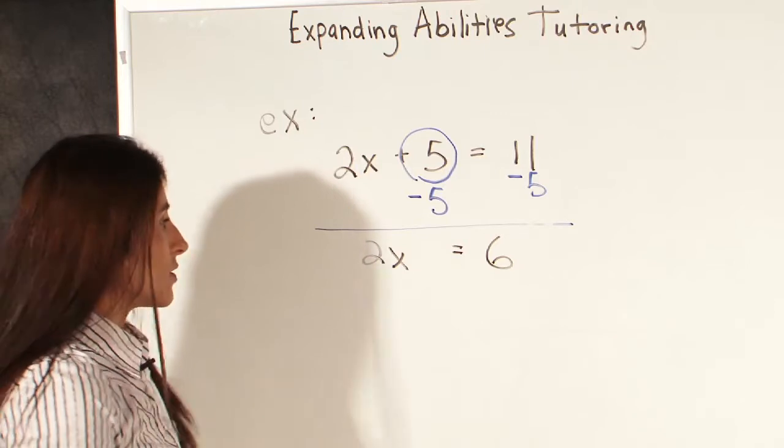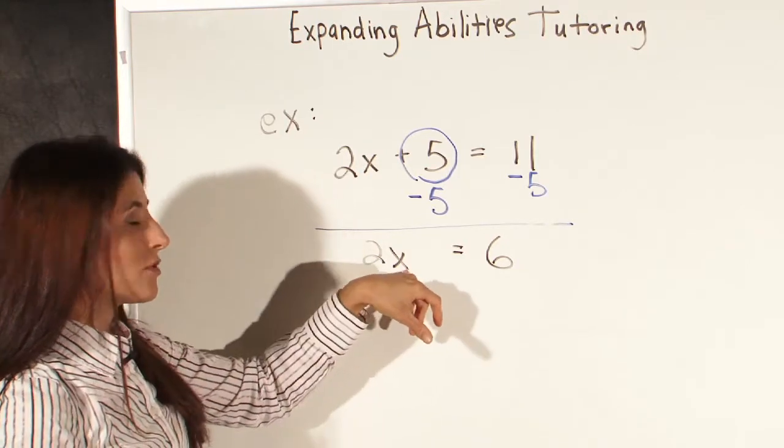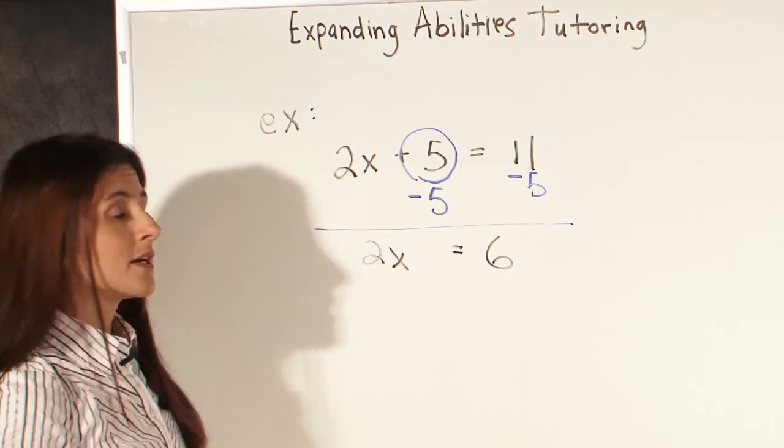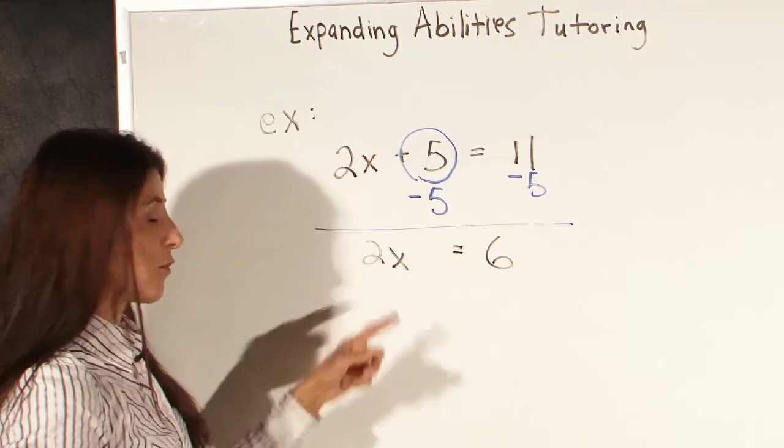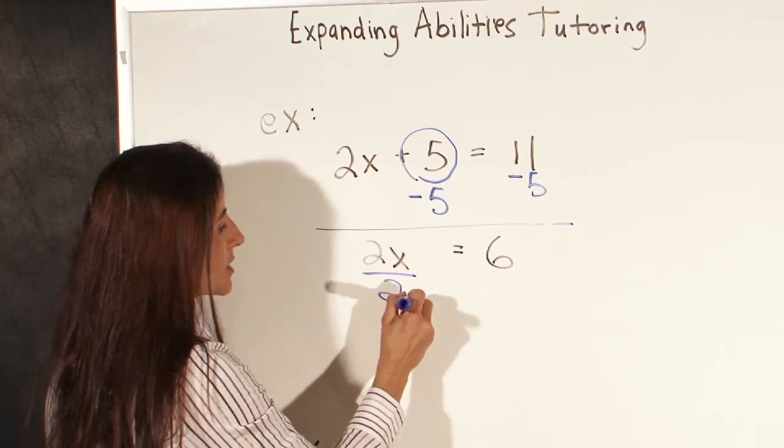The second thing we want to do is remove the number that is connected to the x, and it's connected by multiplication. 2x means 2 times x. So we need to do the opposite of multiplication to get rid of the 2, which means we divide by 2.